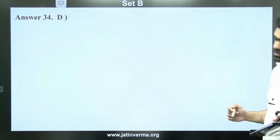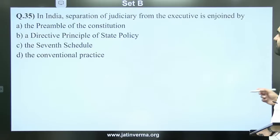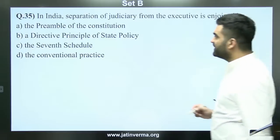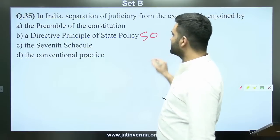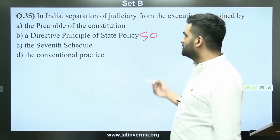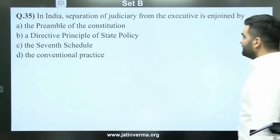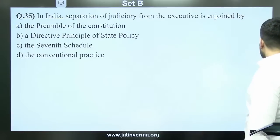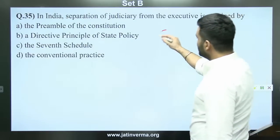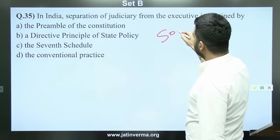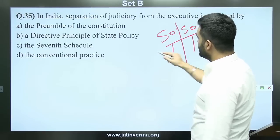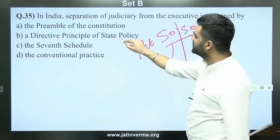Question 35: In India, separation of judiciary from the executive is enjoined by Article 50 — it is in the Directive Principles of State Policy. The answer is B. A mnemonic: judiciary and executive are 50-50, helping remember Article 50 which falls under Directive Principles of State Policy.